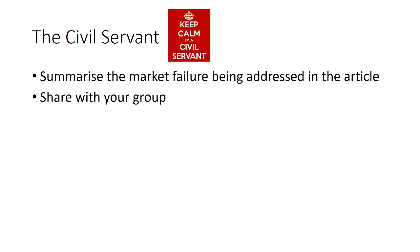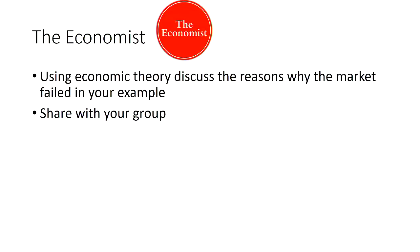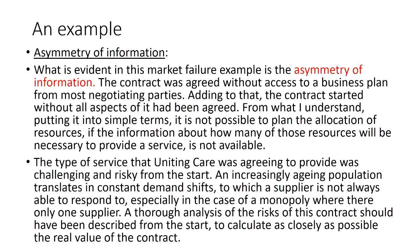The civil servant then summarizes the market failure addressed in the article — each team member provides about a paragraph. The economist uses economic theory to discuss the reasons why the market failed. For example, in one article the issue was asymmetric information, so the economist had to provide a definition of asymmetric information and show how it was reflected in the article.